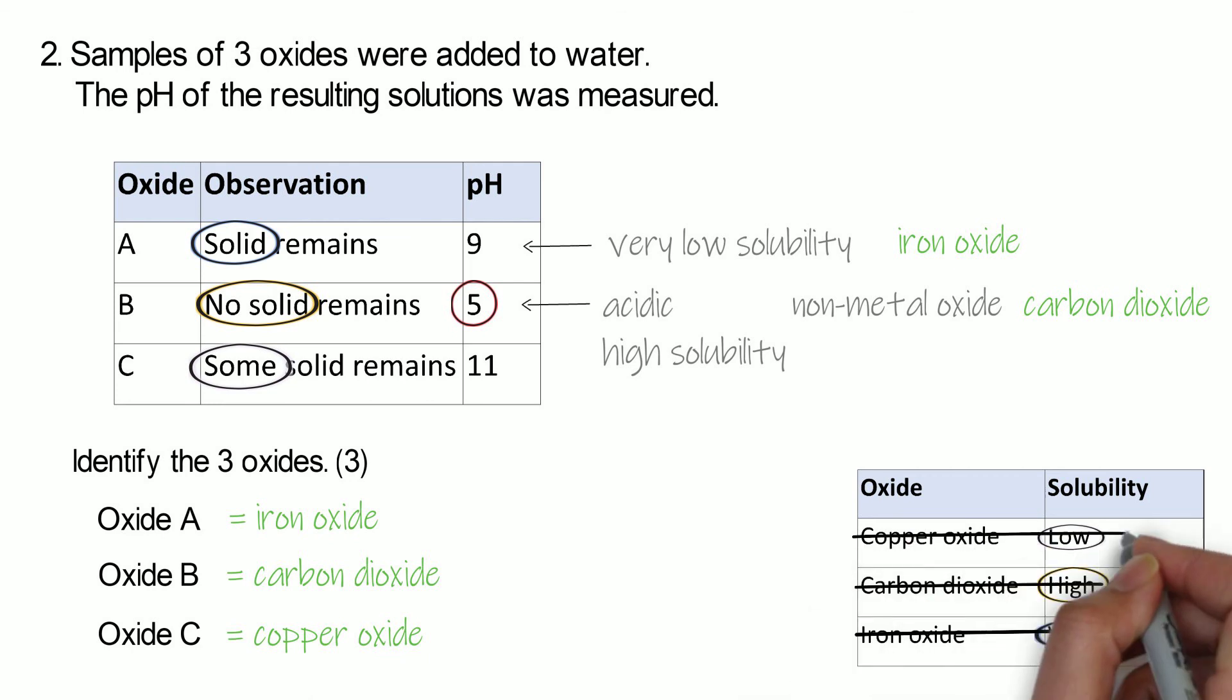If they've given you a table of data and you haven't used the data in the table, ask yourself why. What was I meant to be doing with that data? They will only give you a table of data if they want you to use it. So make sure if you see a table, think about what you can do with that information.